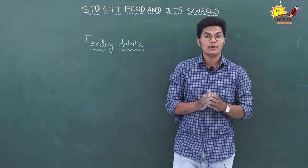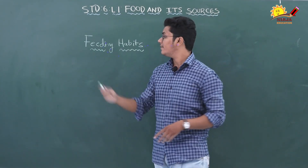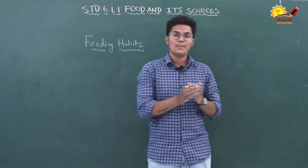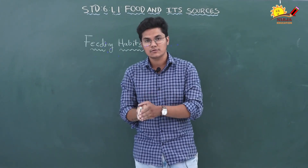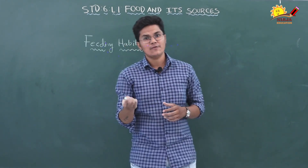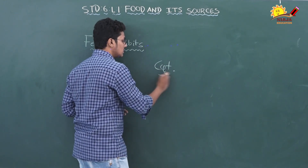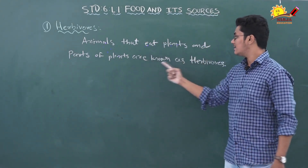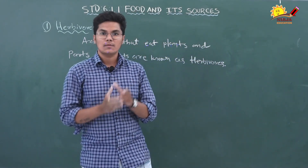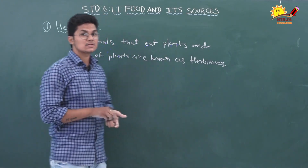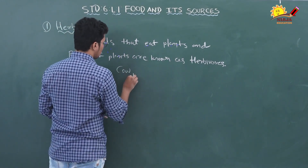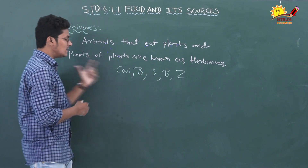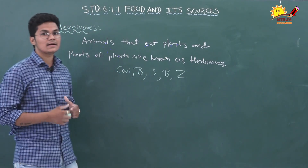In the next part of the chapter we are going to learn about the feeding habits of organisms. Different types of animals eat different types of food. They cannot produce food for themselves — they depend on plants and other animals for their nourishment. Based on their food habits, animals are classified into different categories. The first category is herbivorous: animals that eat only plants or parts of plants are known as herbivorous. Examples are cow, buffalo, squirrel, butterfly, and zebra.